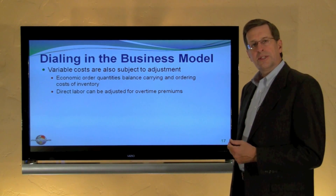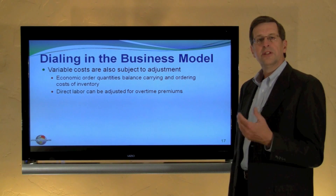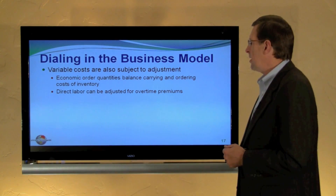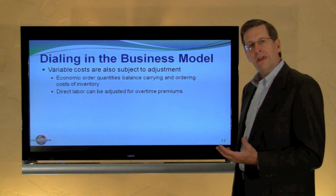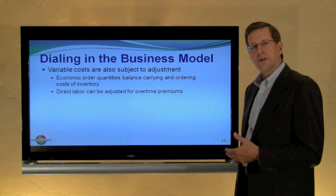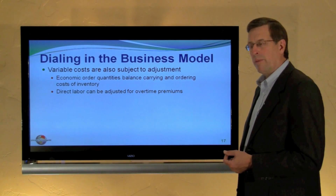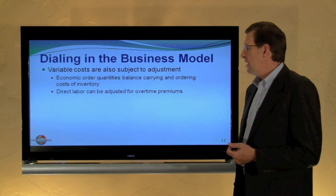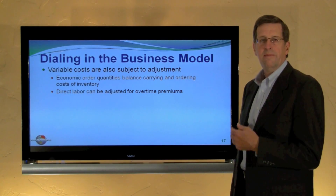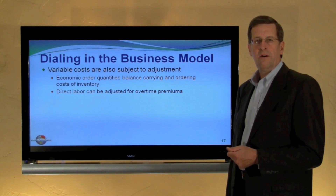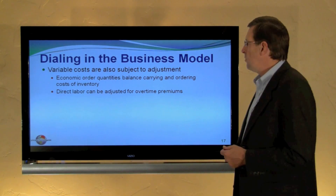Certain variable costs are also subject to adjustment. We saw an example with parts where ordering 10, 100, or 1,000 units yields a different price per part — we need to optimize our purchasing. An economic order quantity formula introduced later in the book is used to balance carrying and order costs for inventory and perhaps achieve a lower price point. Also, direct labor can be adjusted for overtime premiums. We think of labor as a variable cost, but if employees work overtime, we may pay them one and a half times their normal hourly rate. Proper planning can allow us to avoid those overtime premiums by better balancing our workload.